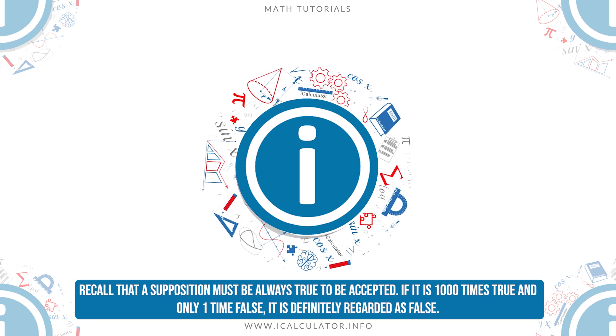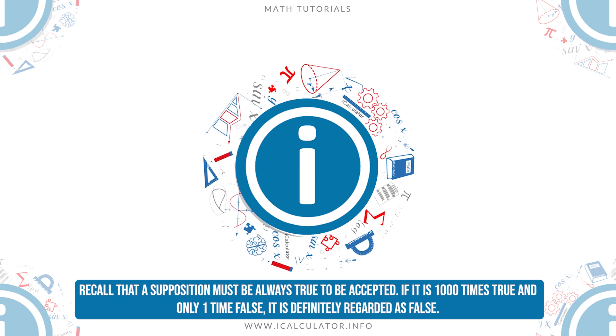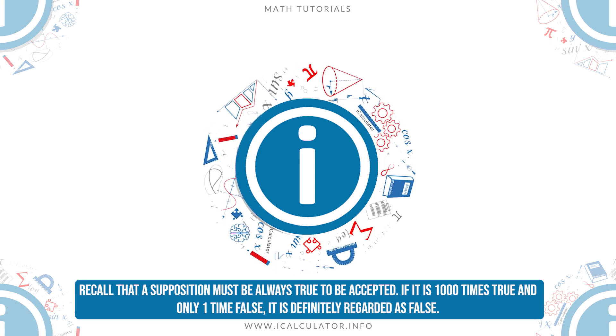Recall that a supposition must be always true to be accepted. If it is 1000 times true and only one time false, it is definitely regarded as false.